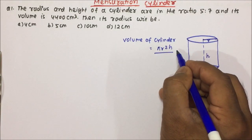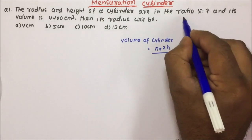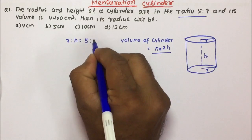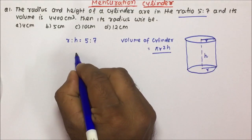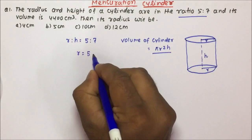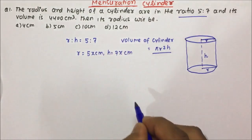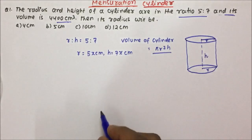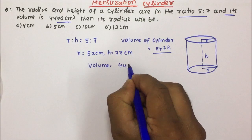What has been given in the question? The radius and the height of a cylinder are in the ratio 5 is to 7. The radius and height are given in terms of ratio. If any data is given in terms of ratio and you want to write it in terms of value, you have to multiply with a variable — so radius will become 5x centimeter and height will become 7x centimeter. And its volume is 4400 centimeter cube.